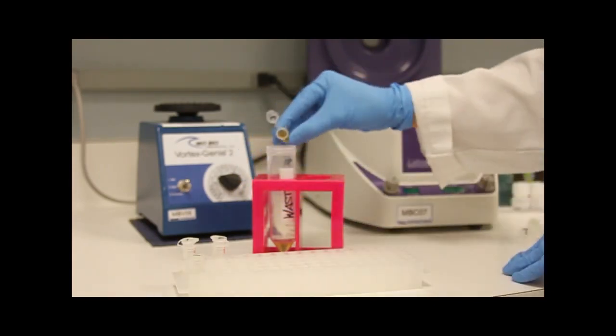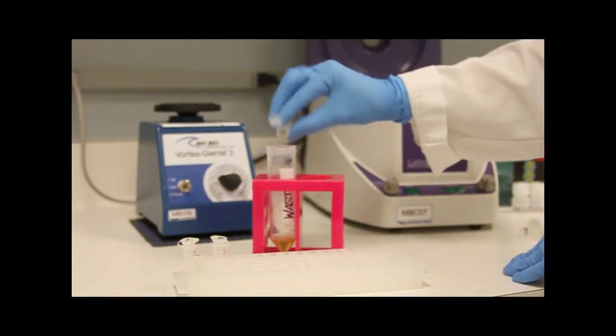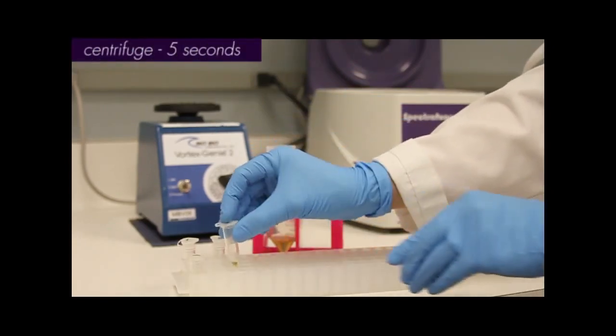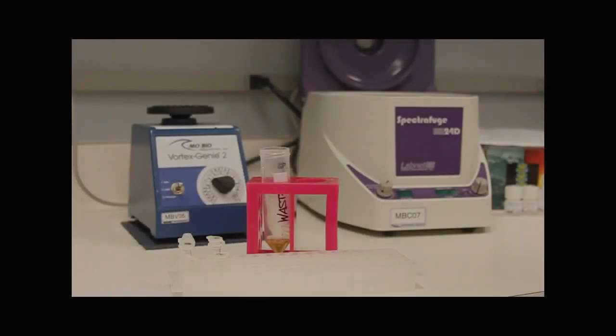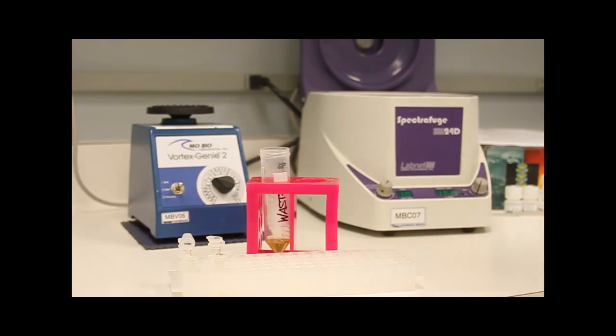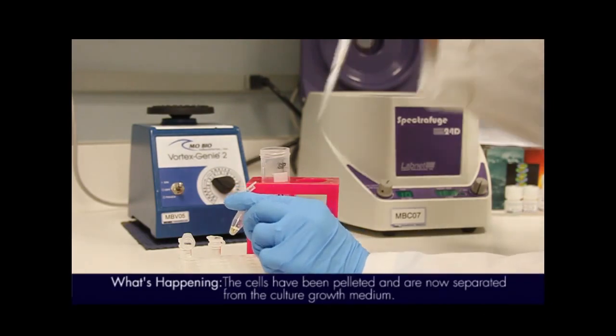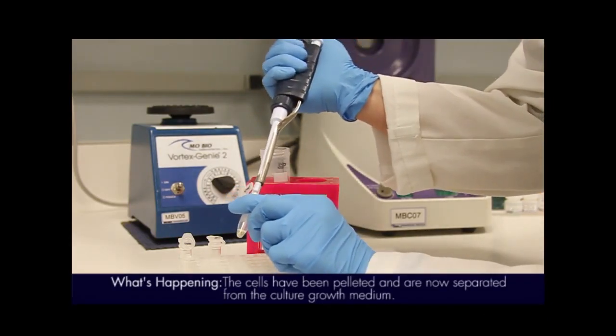Once all of the culture has been pelleted, centrifuge for 5 seconds at 16,000 times G to remove all traces of liquid from the sides of the tube. Remove all visible liquid with a narrow pipette tip. Removing all liquid at this step is critical. Using a small bore pipette tip helps remove all traces of liquid media.